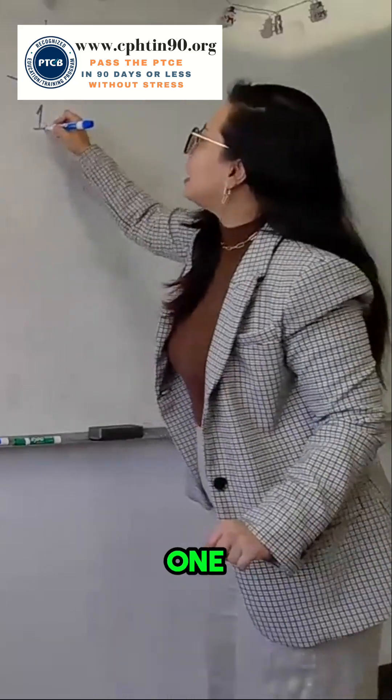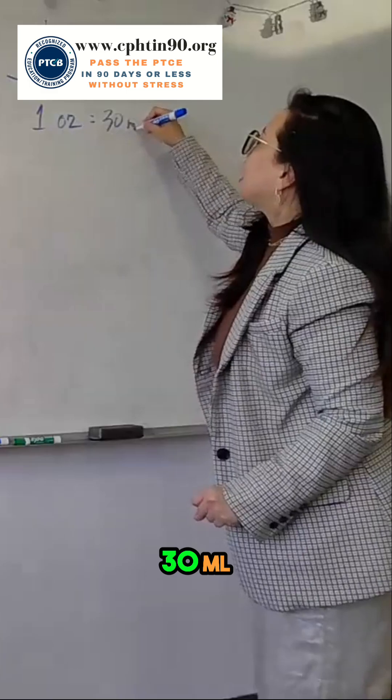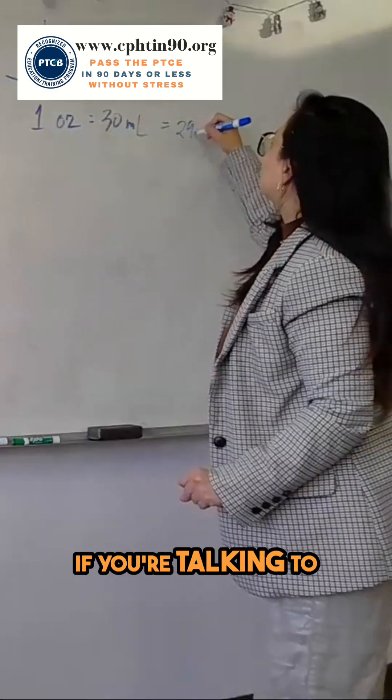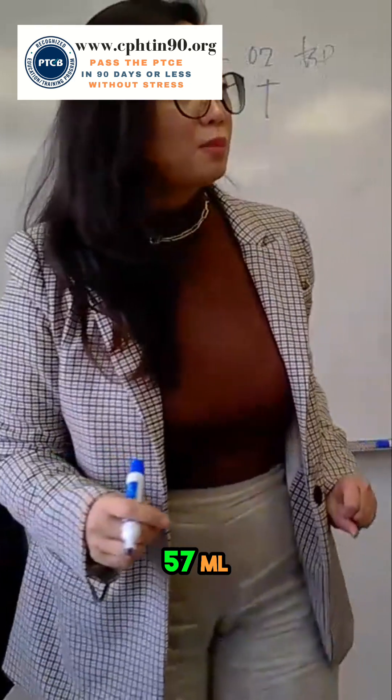The most common one, wine, which is OZ, is equivalent to 30 ml. To be exact, if you're talking to a chemist or a pharmacist, it's going to be 29.57 ml.